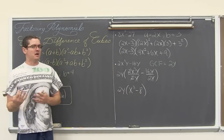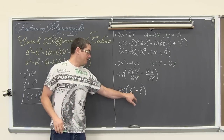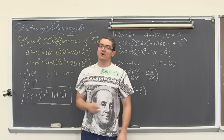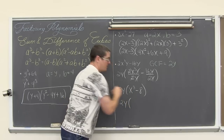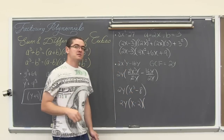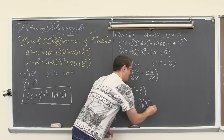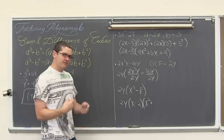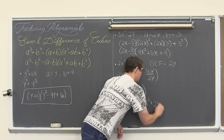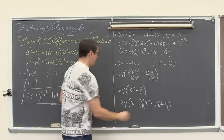A lot of times factoring problems take more than one step. Now inside the parentheses we have a difference of perfect cubes. The cube root of x cubed is x, the cube root of 8 is 2, and there is a minus in the middle. So a is x and b is 2. Following the difference of cubes pattern — minus in the binomial, plus in the trinomial — we get 2y times x minus 2 times x squared plus 2x plus 4. That is the end of that example.